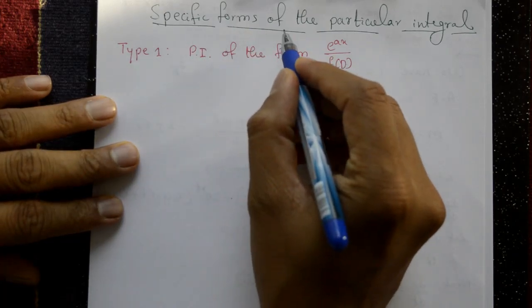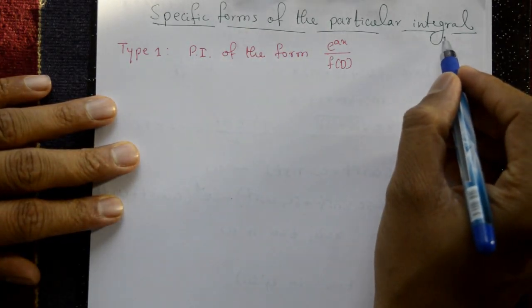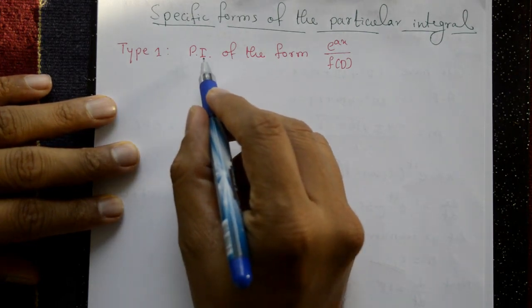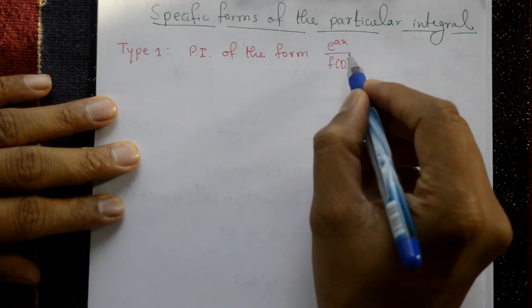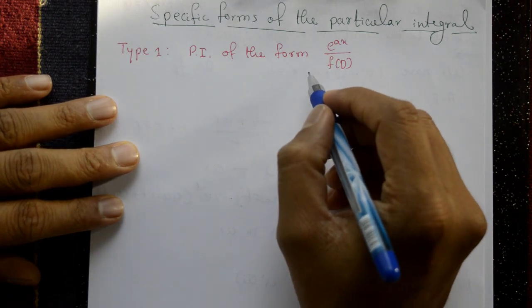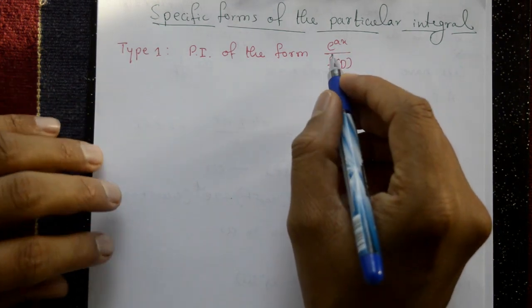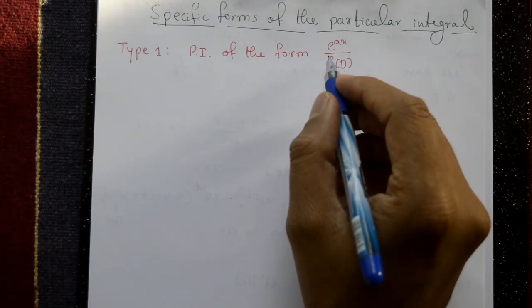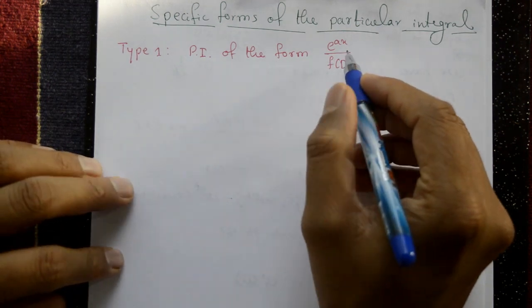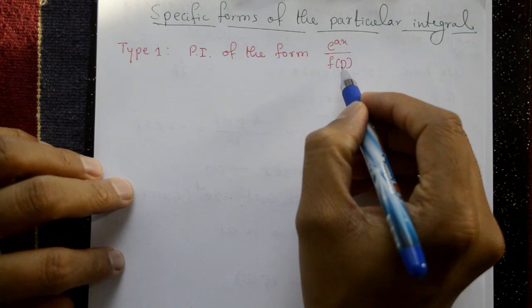Specific forms of the particular integral — Type 1: particular integral of the form e^(ax) upon f(D). Given a differential equation, you find the complete solution, which means complementary function plus particular integral. This is Type 1: e^(ax) upon f(D).